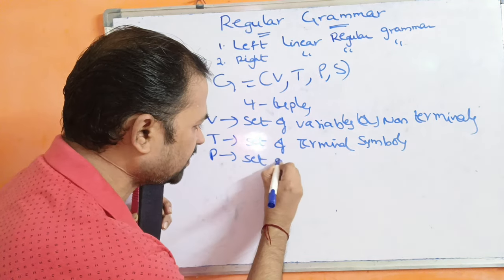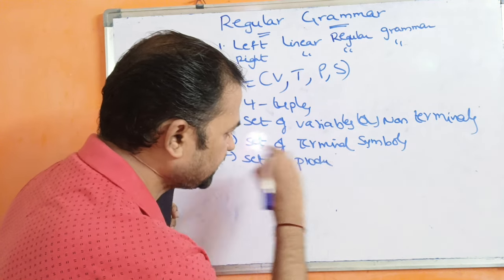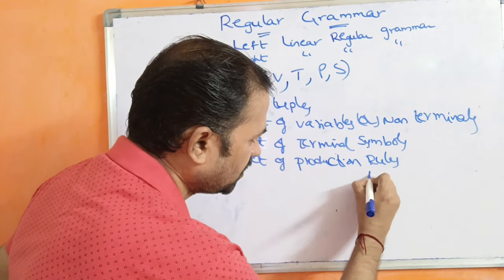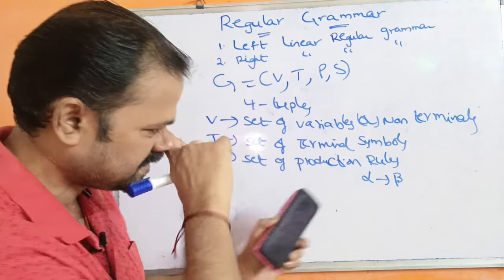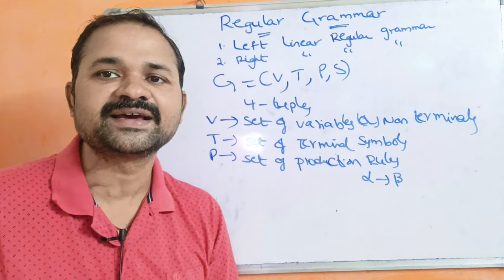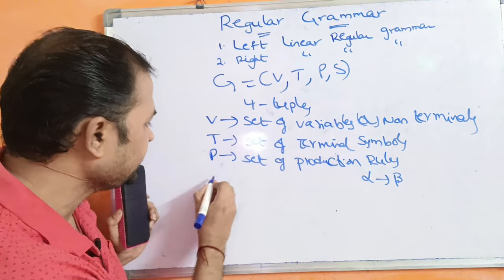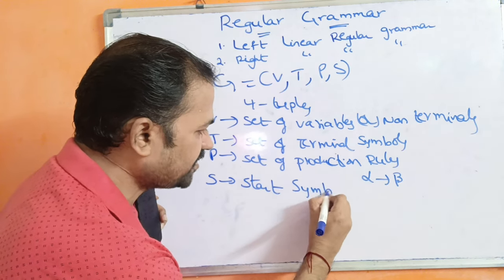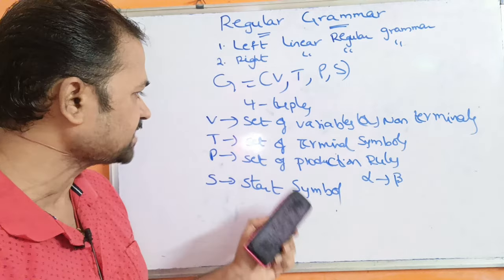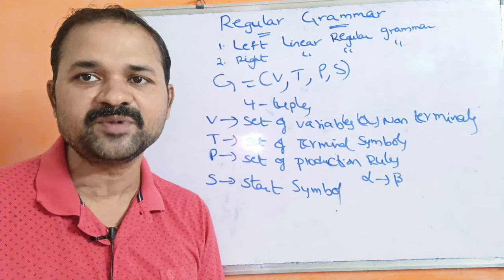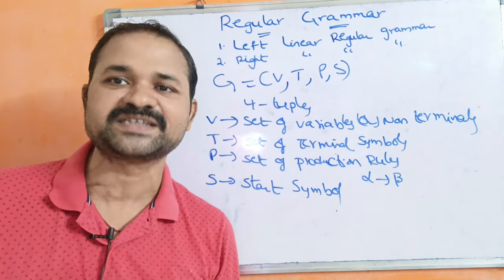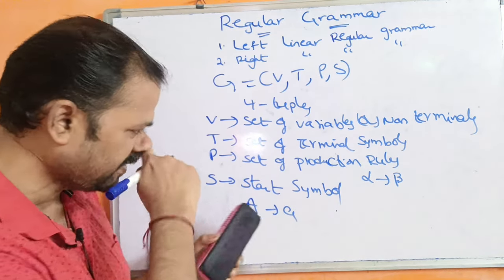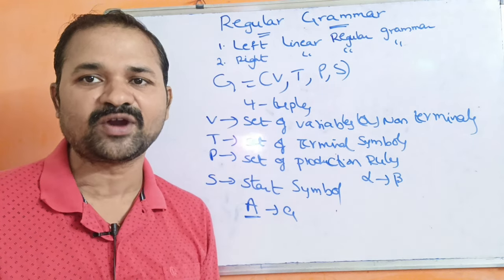Next one is P. P means set of production rules. Every production rule is in the form alpha implies beta, where alpha means the left hand side production and beta means the right hand side production. The last one is S, which means the start symbol. The start symbol is always a variable, a non-terminal. The left hand side symbol of the first production is the start symbol — for example, if the first production is A implies CA, then A is the start symbol.